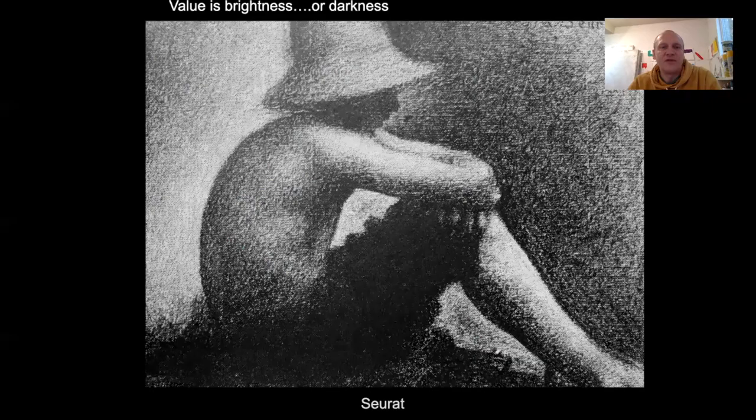Value. In our use of the word, value is brightness or darkness — not worth. We're talking about brightness and darkness. When you see abutting values, darkness and lightness, in a work like this, they are making implied lines.